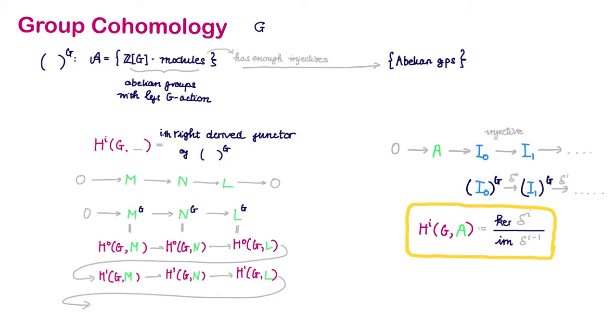From our previous discussion, we see that then every short exact sequence of G modules extend to a long exact sequence of cohomology.